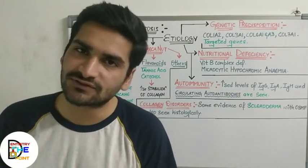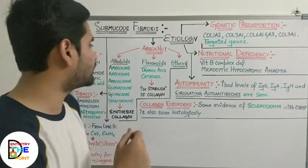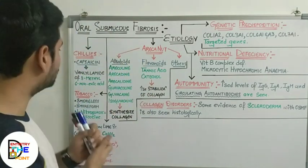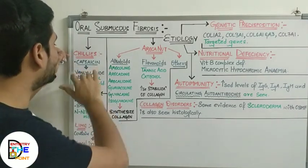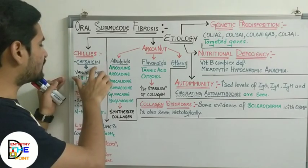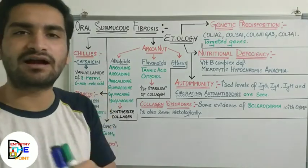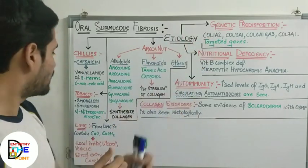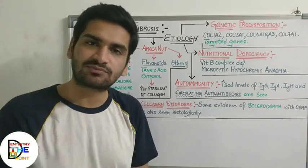Moving on to the etiology of oral submucous fibrosis: it is considered a multifactorial disease with various factors involved. The first factor is chilies or spicy food, which contain capsaicin — the compound responsible for irritation in the oral mucosa. Capsaicin is the vanilyl amide of 8-methyl-6-nonenoic acid. This is one etiological factor.